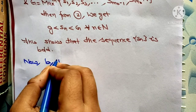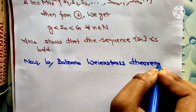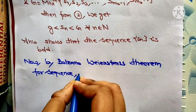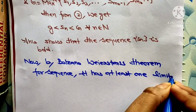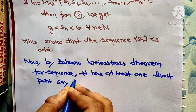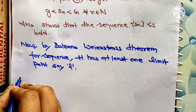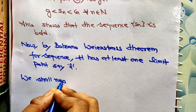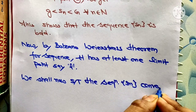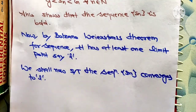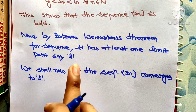Now by the Bolzano-Weierstrass theorem for sequences — not for sets, but for sequences — every bounded sequence has at least one limit point, say L. I also uploaded the Bolzano-Weierstrass theorem for sequences; links are given in the description box. We shall now show that the sequence Sn converges to L.